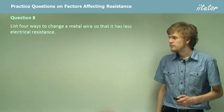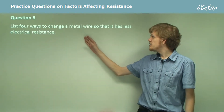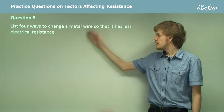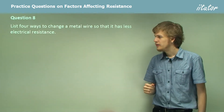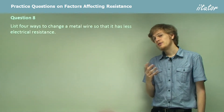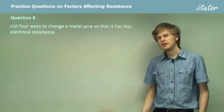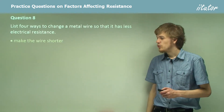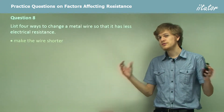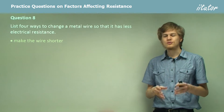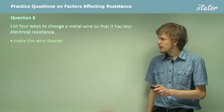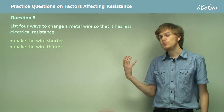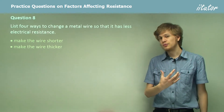Question 8. List four ways to change a metal wire so it has less electrical resistance. The easy ones first: we can make the wire shorter, so there's less wire that the electrons have to travel through. We can make the wire thicker, so the electrons have more area to travel through.